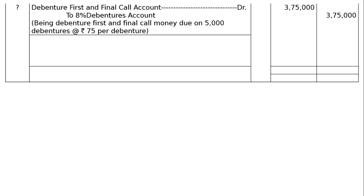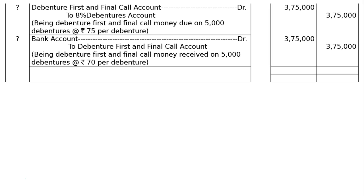When the money is received — Bank Account debited to Debenture First and Final Call Account, being debenture first and final call money received on 5,000 debentures at Rs.75 per debenture. Towards the end, these amounts are totaled: Rs.10,50,000 in both debit and credit columns. This is the final answer.